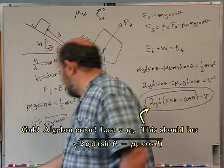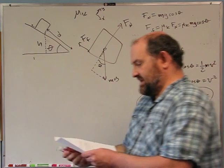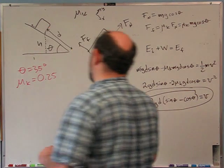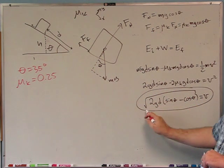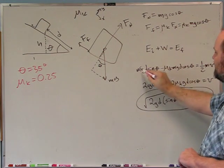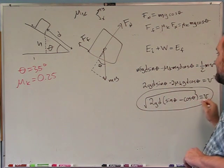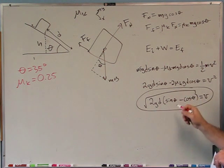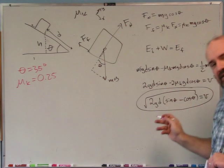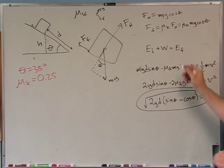Now evaluate this numerically for θ = 35° and μk = 0.25. One thing to note: I didn't give you the mass of the block, and that's okay because it doesn't appear in the final expression. If you work through it symbolically, you discover you never need that m. So if something's not given that you think you need, give it a name and hope it drops out — if it doesn't, either you've done it wrong or something is missing.